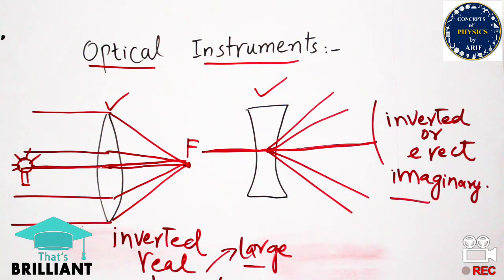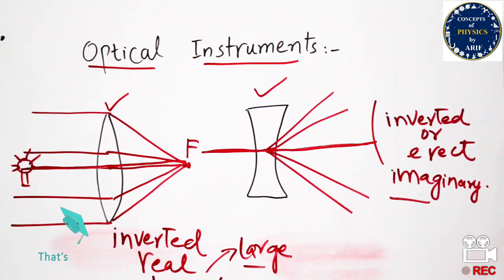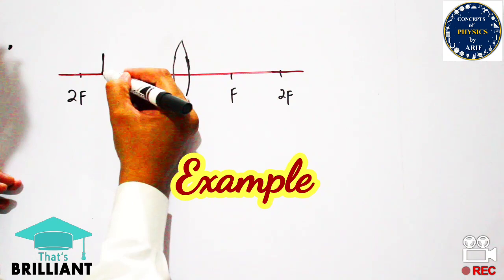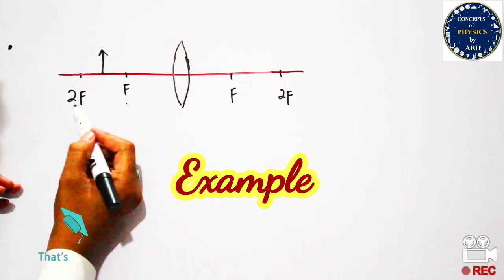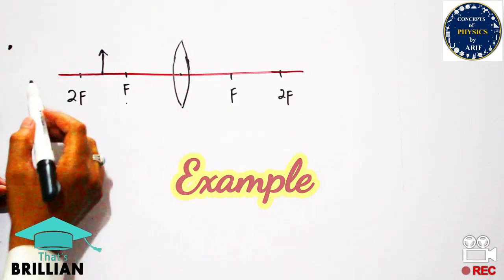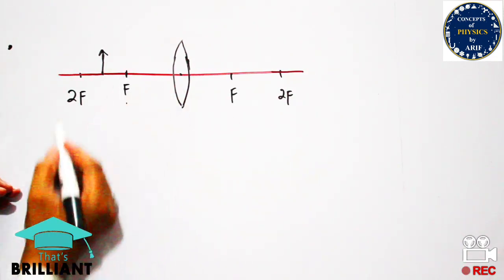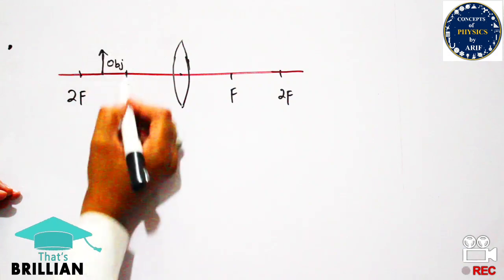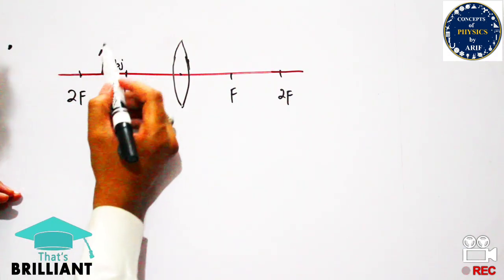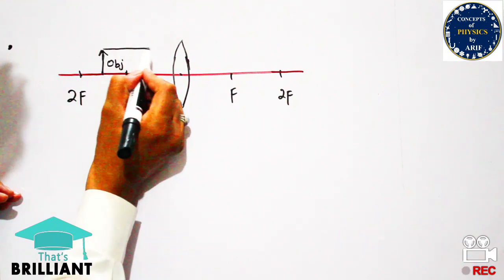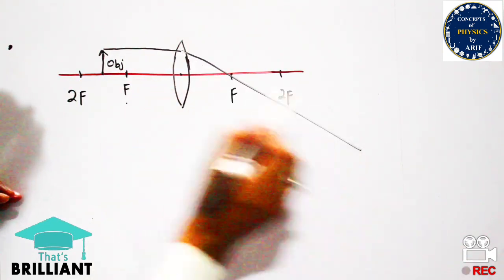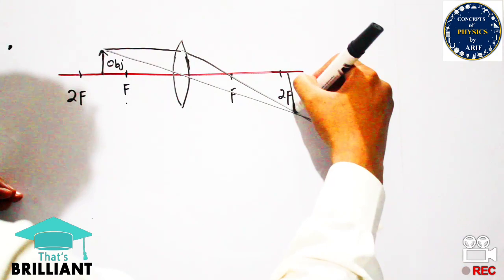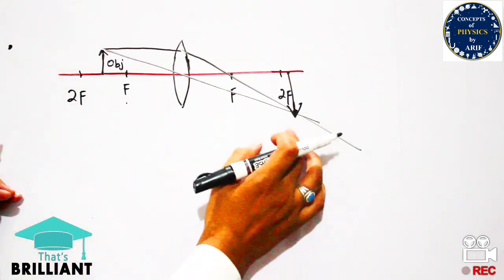I will discuss examples related to the convex lens and concave lens. For the convex lens, we will place an object between f and 2f in front of the convex lens. When a ray of light passes through the corner of the convex lens, it passes through the focus. When a ray of light passes through the central point or origin of the convex lens, it continues in a straight line.